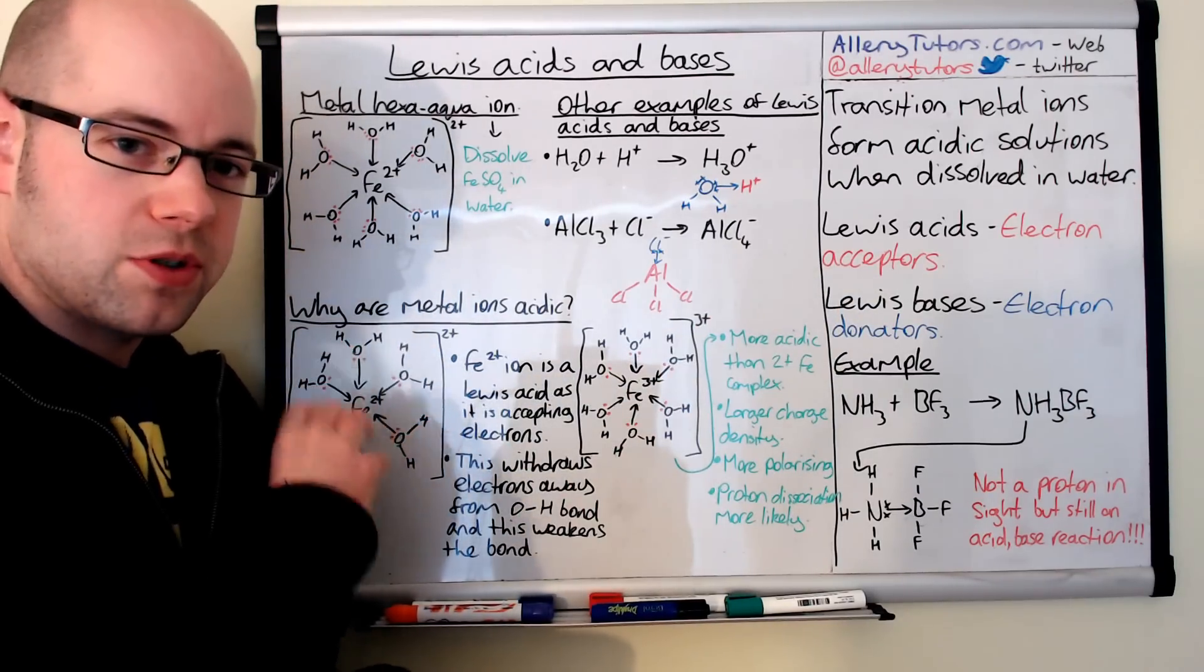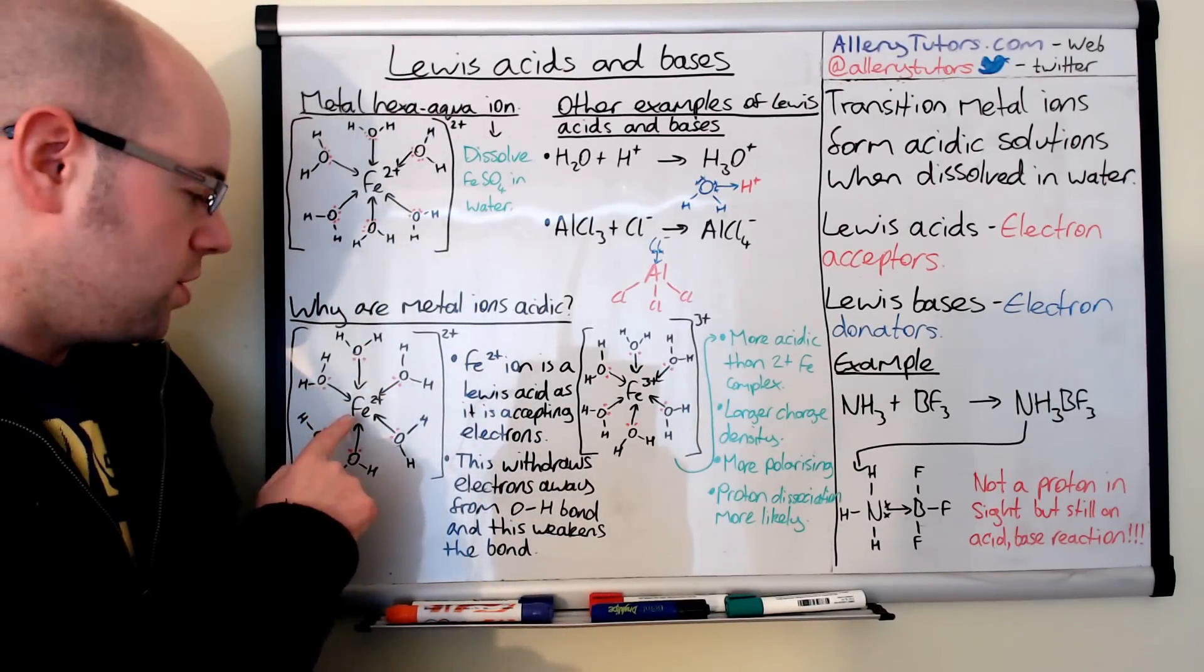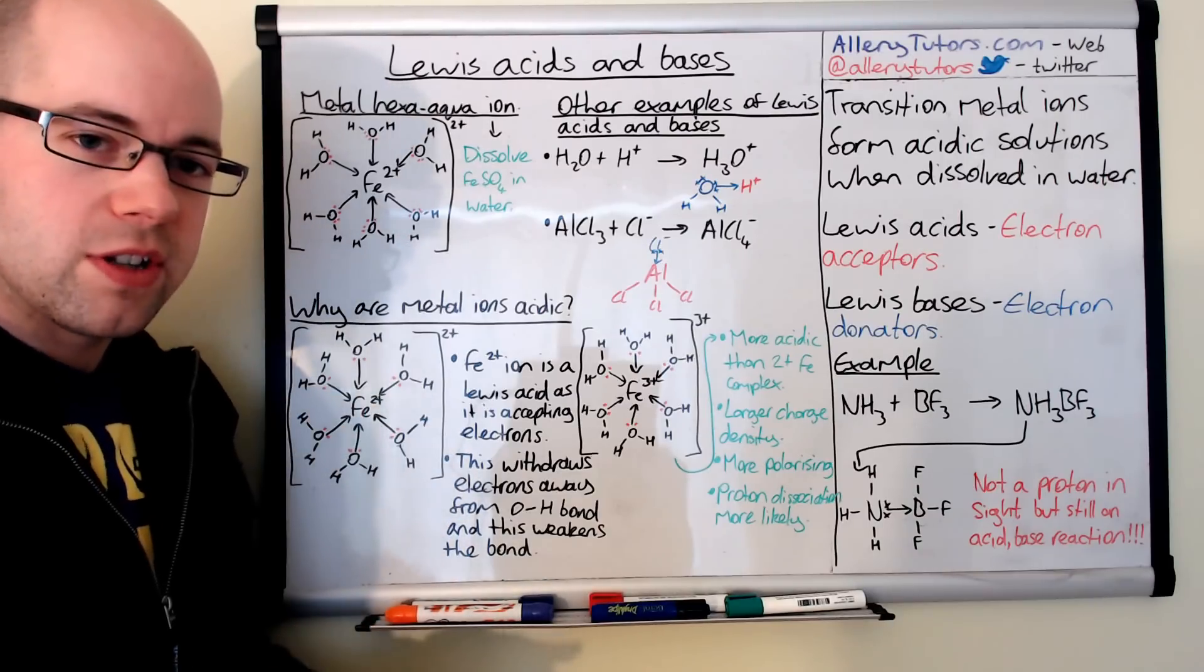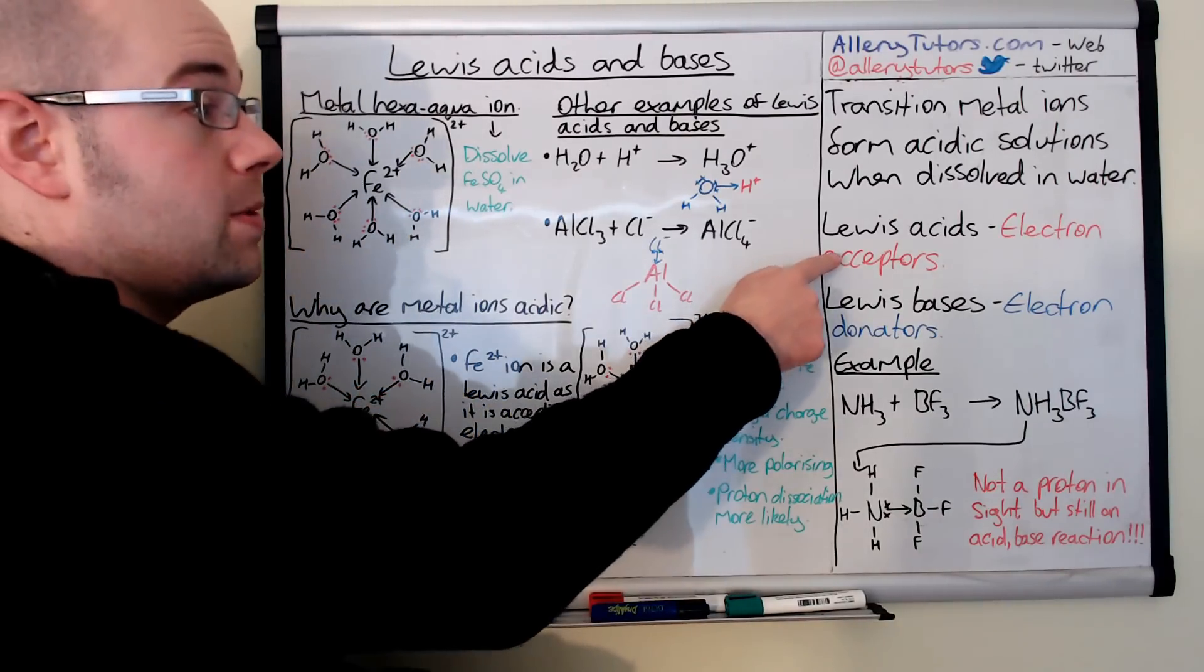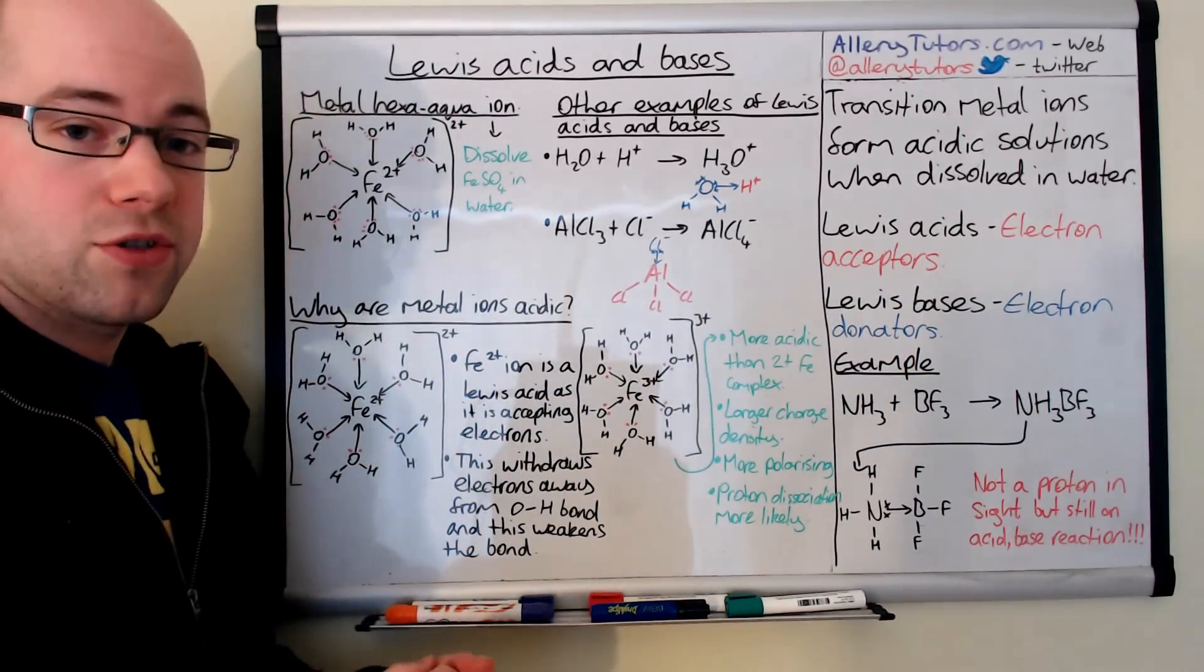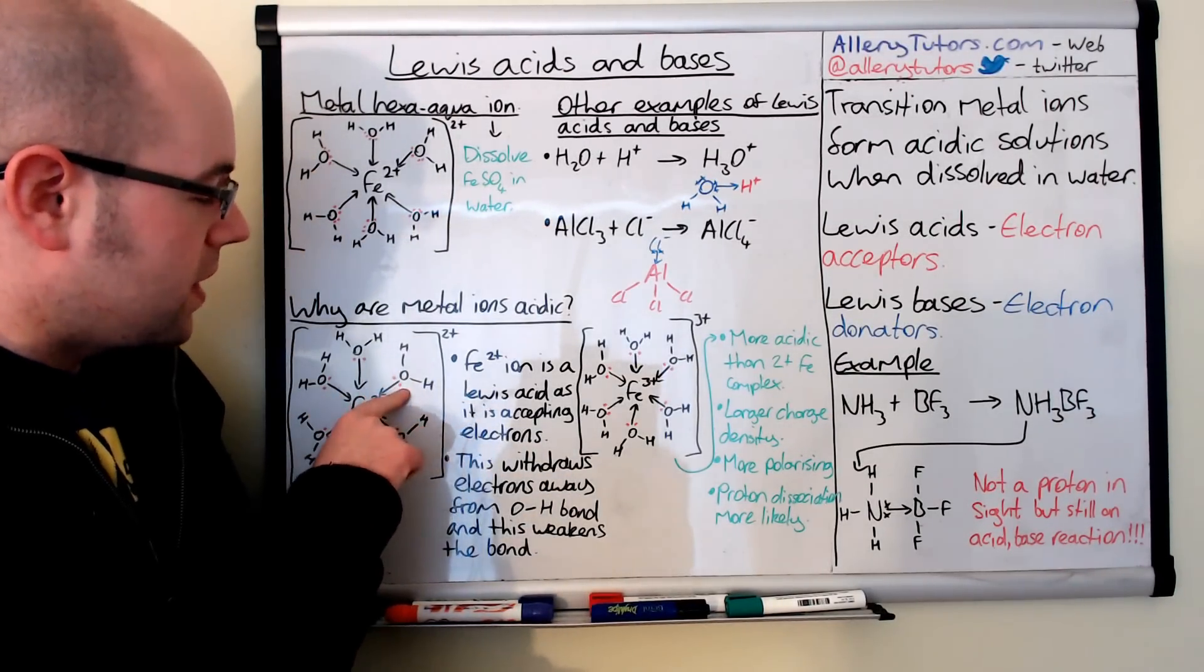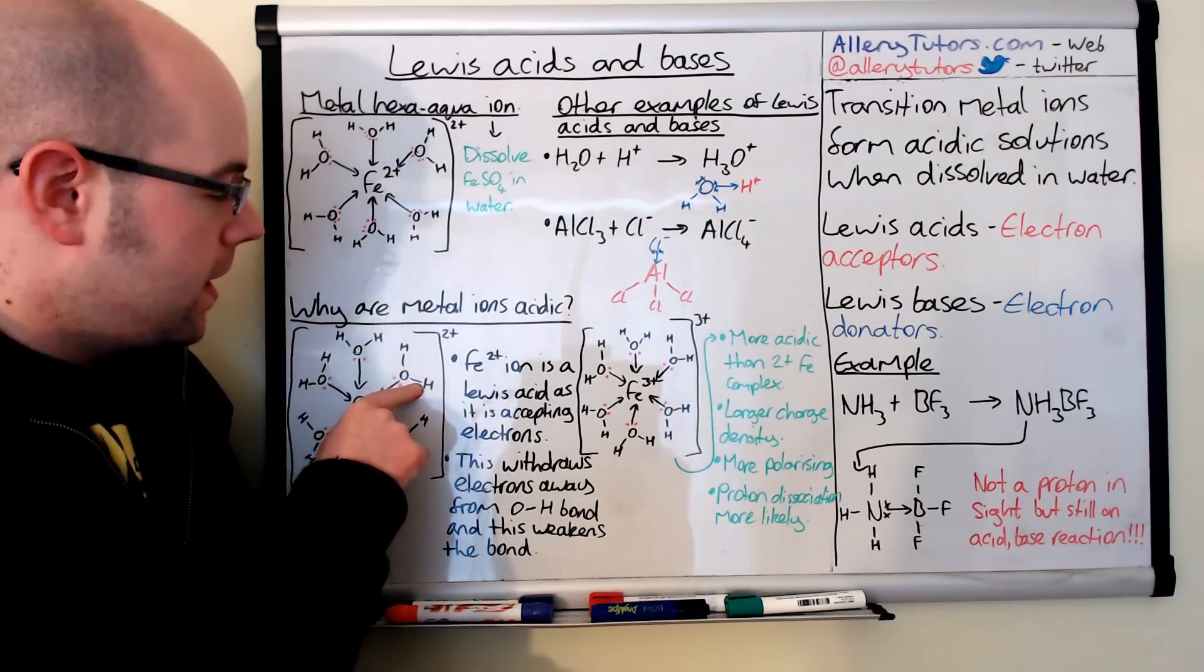These are acidic so we're looking at the Lewis acid part. You can see here we've drawn out our complex with Fe2+. You can see that we've got a lone pair of electrons on each of the oxygens on the water that have been donated into the transition metal ion. This is evidence of a Lewis acid because the iron in the middle, Fe2+, is accepting the electrons. The electrons have been pulled in by the positive ion in the middle, and because of this, this effectively weakens this OH bond.